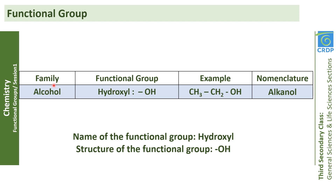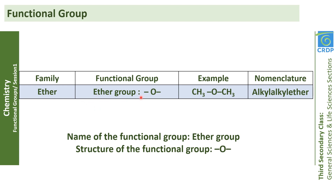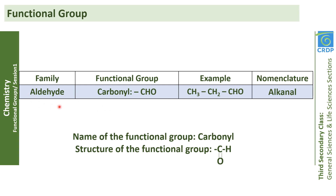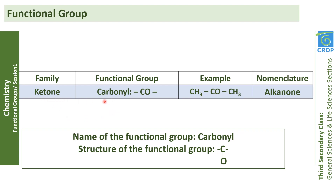You are given a table with the family, the functional group, the example, and the nomenclature. We will concentrate mainly on the name and structure of the functional group. The first functional group is the hydroxyl group for the alcohol family, with the structure –OH. The second is the ether group for the ether family, with an oxygen between two carbons. The carbonyl group is used for the aldehyde family, with the structure CHO, and also for the ketone family, where the structure is a C double bond O between two carbons.